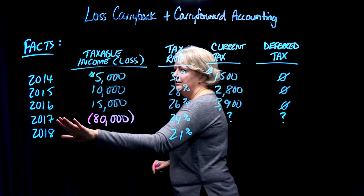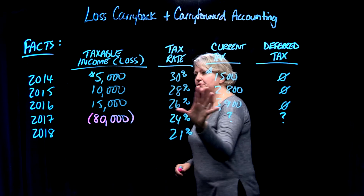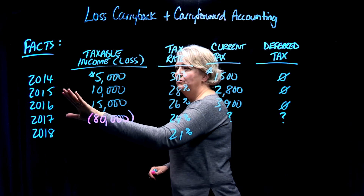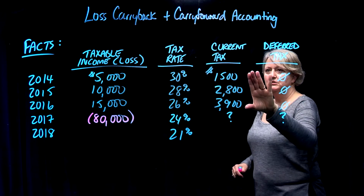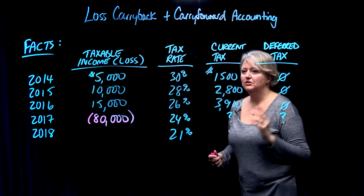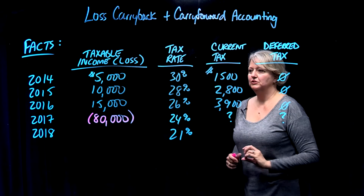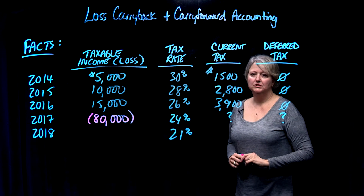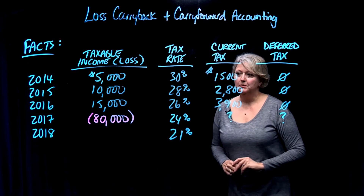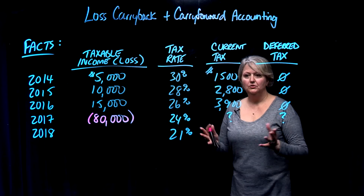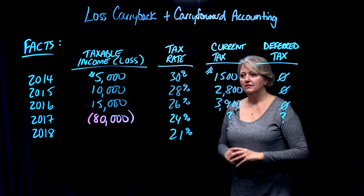We're currently sitting in fiscal year 2017 for this company. For 2014, 2015, and 2016, these were the taxable income situations and this is the current tax that was paid. We're assuming there's no timing differences, so there were no deferred tax entries needed in those years. Now we're in 2017, and we have a taxable loss of $80,000. So how do we do the accounting for that? That's what we're going to work through in the next few stages.